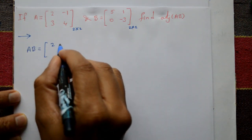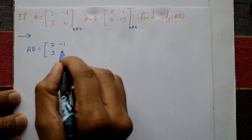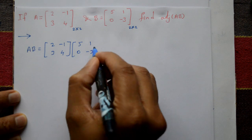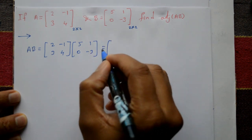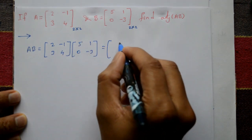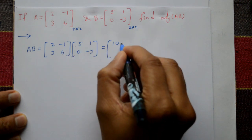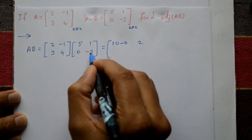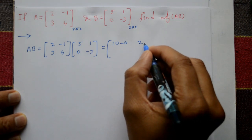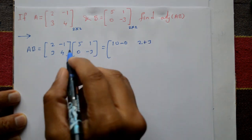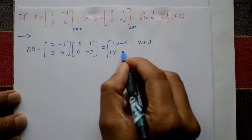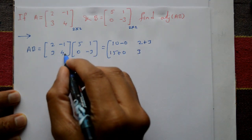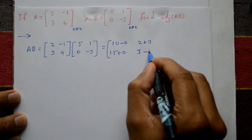Matrix A into B: [2, minus 1; 3, 4] into [5, 1; 0, minus 3]. Row into column: 2 into 5 is 10, minus 0; 2 into 1 is 2, minus 1 into minus 3 is plus 3. Then 3 into 5 is 15, 4 into 0 is 0; 3 into 1 is 3, minus sign, 4 into 3 is 12.